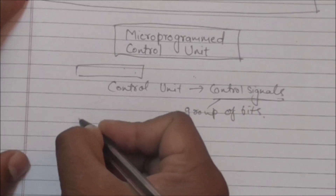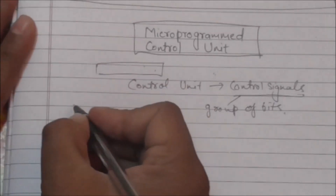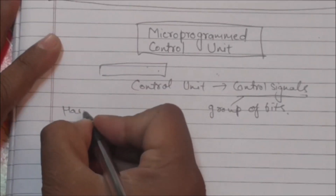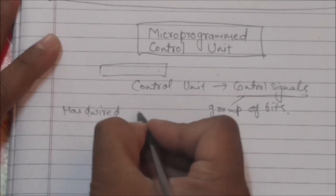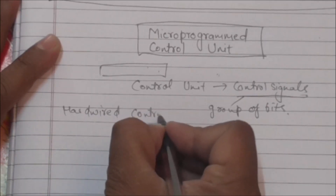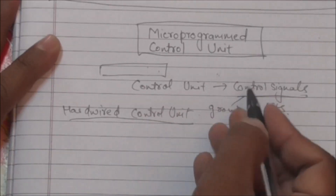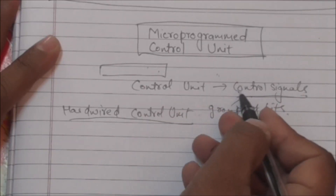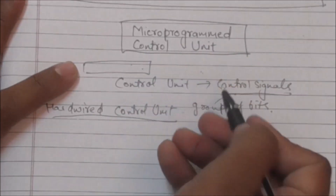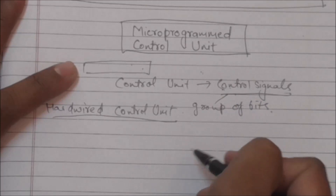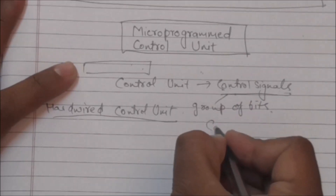In case of a hardwired control unit, these control signals are generated by control logic gates. But in case of a micro-programmed control unit, these control signals are stored in a memory, and that memory is called control memory.